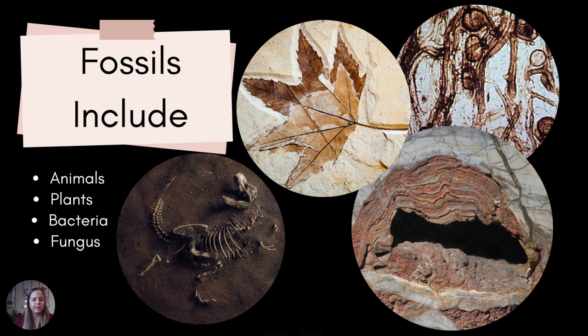Fossils include animals and plants, but they also include bacteria and fungi, which can also be preserved in the rock record. The bottom right image is a stromatolite — these would have been fossilized things like cyanobacteria or things that would have been in the ocean that might have fallen to the ocean floor and got preserved in the sediment.